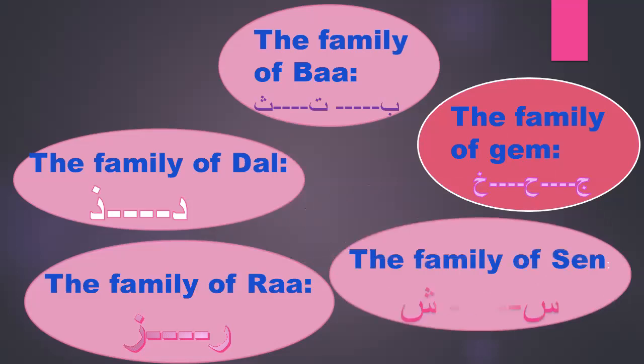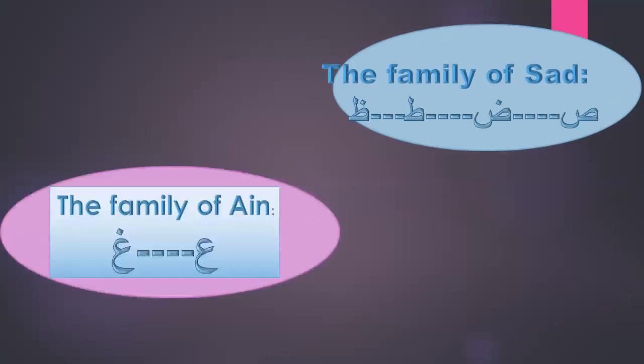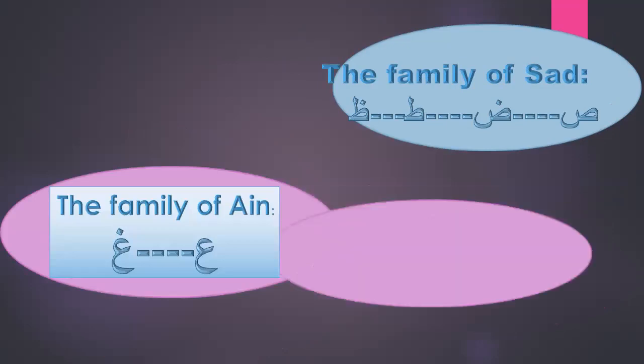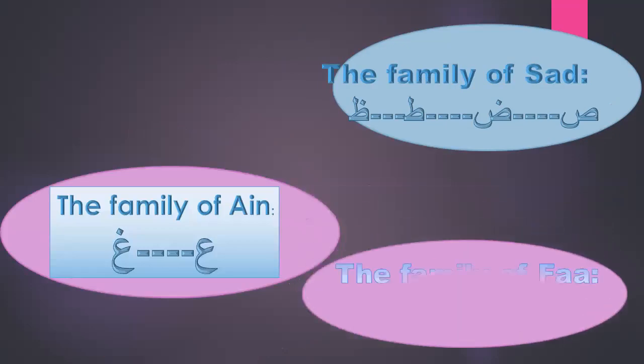The family of Seen has 2 letters: Seen and Sheen. The family of Sod has 4 letters. The family of Ayn has 2 letters: Ayn and Ghayn. The family of Fa has 2 letters: Fa and Qaf.